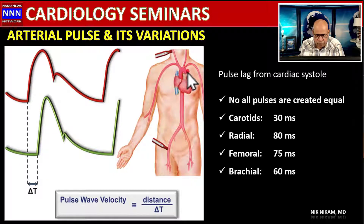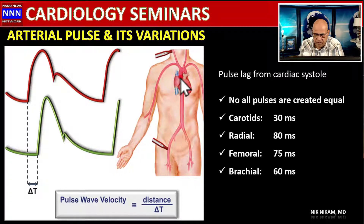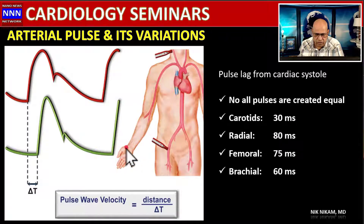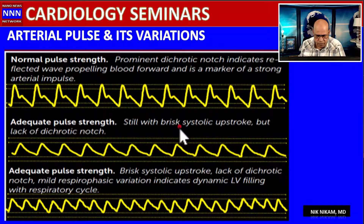When the heart pumps blood, the impulse is not transmitted instantaneously — blood is liquid and must travel through the arterial system. After leaving the aorta, it takes 30 milliseconds to reach the carotids, 80 milliseconds to reach the radial arteries, 75 milliseconds to reach the femorals, and 60 milliseconds to reach the brachial artery.